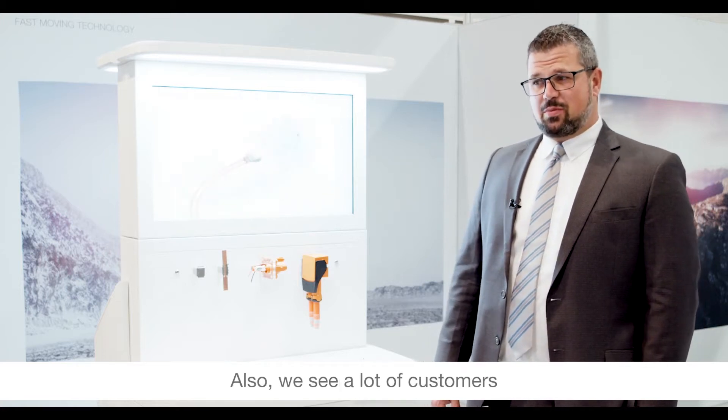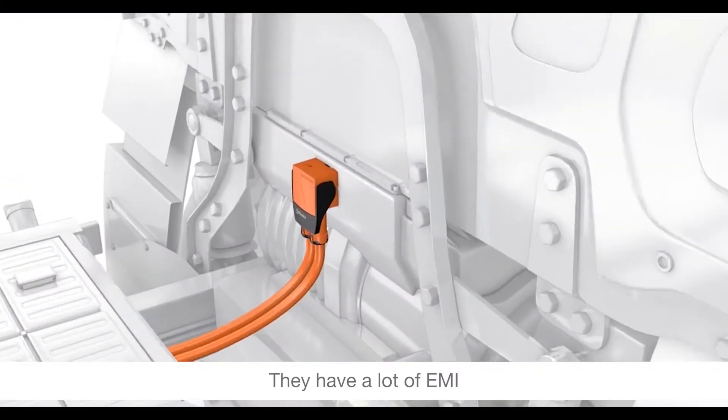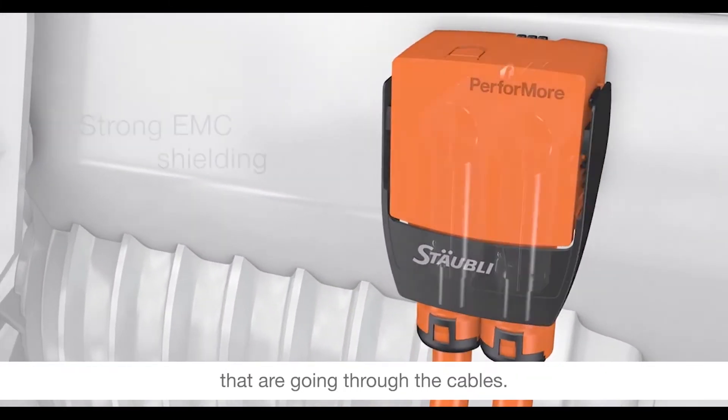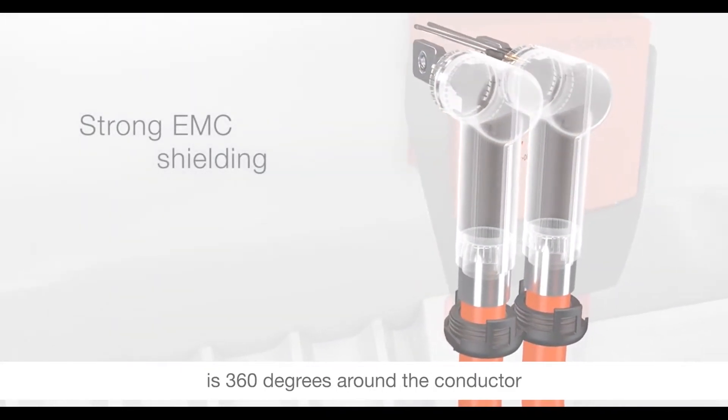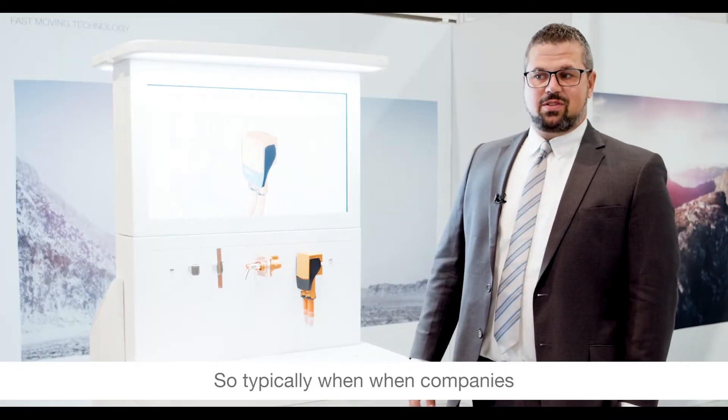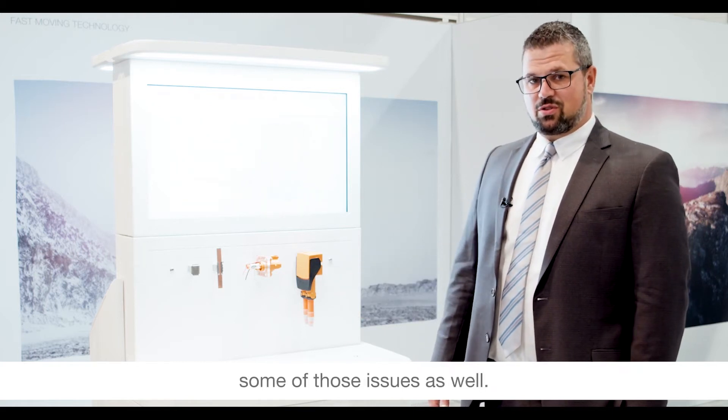We see a lot of customers with similar power levels who have EMI issues that arise from the power going through the cables. Something unique about this is the shielding is 360 degrees around the conductor all the way through the contacts themselves, so typically when companies have EMI issues, they can use this and it solves those problems.